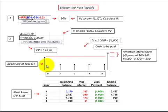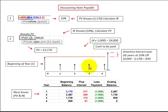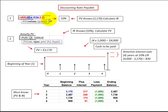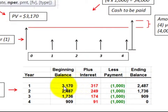Now, if we happen to know what the present value is on the notes payable — say for example we purchase something and we know what its value is — and then we know what we have to pay at the end of each of the next four years, we can go back and calculate the interest rate by using the internal rate of return function on a calculator or in Excel. But in either case, we've determined our present value and we know what our interest rate is.